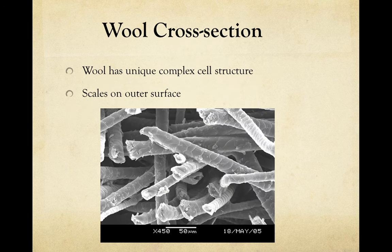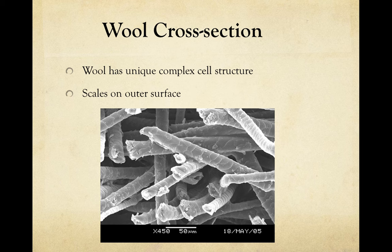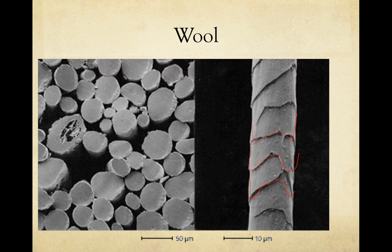Wool from sheep is very common in forensic scenarios. Wool has a pretty unique cell structure with scales on the outer surface. These scales actually form a cuticle pattern, because it's a hair that's also used as a fiber for clothing. So you should see a nice cuticle pattern, because it's an animal hair that's also classified as a fiber.